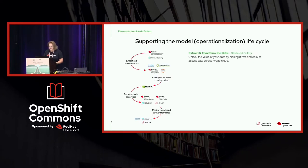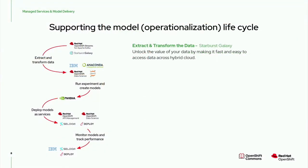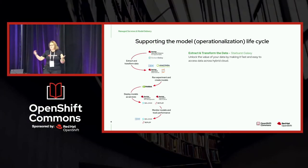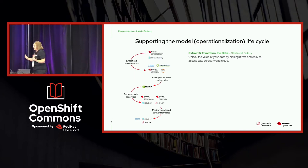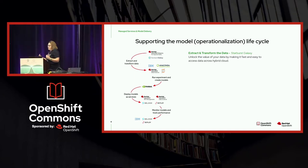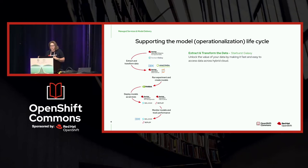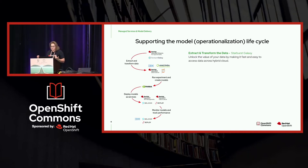Let's take a look at the model lifecycle and where managed services fit in. For extracting and transforming the data, rather than building something ourselves, the Red Hat OpenShift data science team decided to invite a variety of open source vendors in so that you have a lot of choice. You could use Apache Kafka Streams to pull in your data, or you could use Starburst Galaxy to curate your data and unlock its value — making it very fast and easy to access across the hybrid cloud.